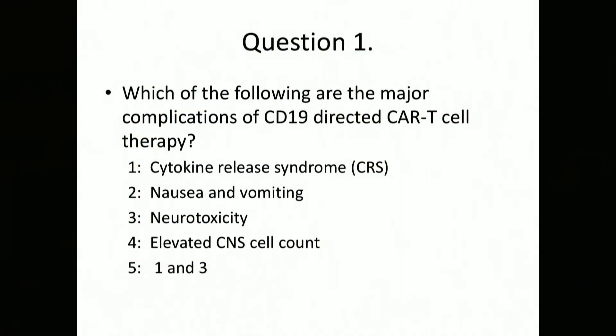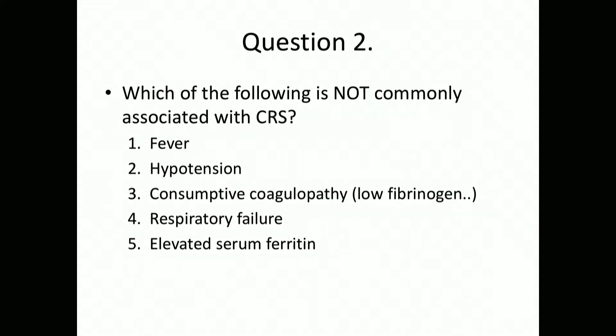Here's a couple of questions. Which are the following major complications of CD19-directed therapy? Cytokine release syndrome, nausea, vomiting, neurotoxicity, elevated CNS cell counts — one and three. And what is not commonly associated with cytokine release syndrome? Fever, hypotension, consumptive coagulopathy, respiratory failure, or elevated serum ferritin. I will talk about each of these.